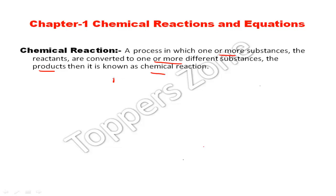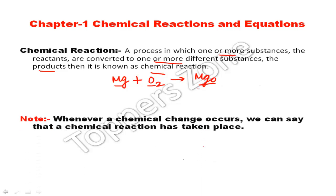In a reaction, the reactants are on the left side. For example, the reaction Mg + O2 gives MgO. Here, Magnesium and Oxygen are the reactants, and MgO, that is Magnesium Oxide, is the product. So a chemical reaction is a combination of reactants and products.